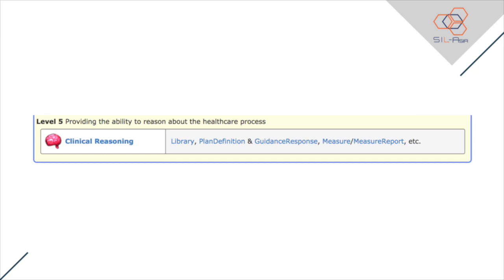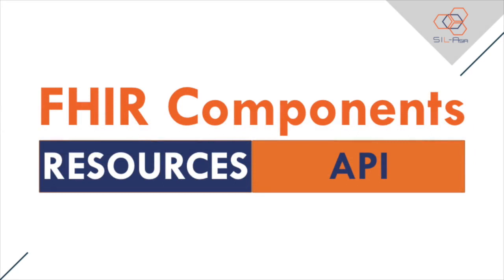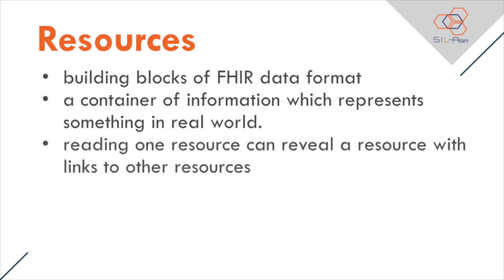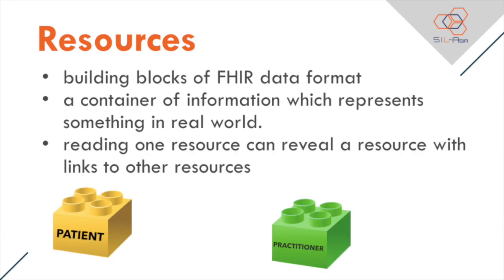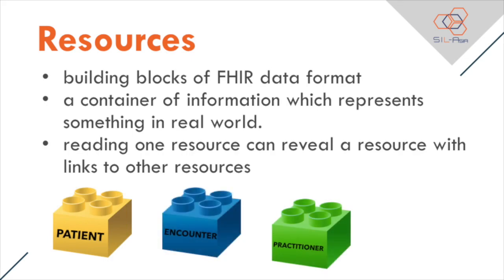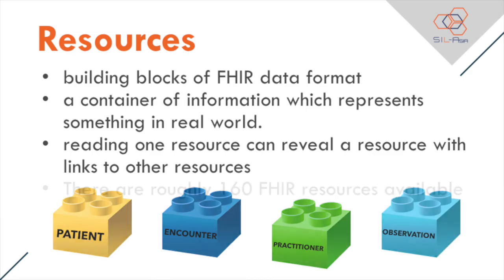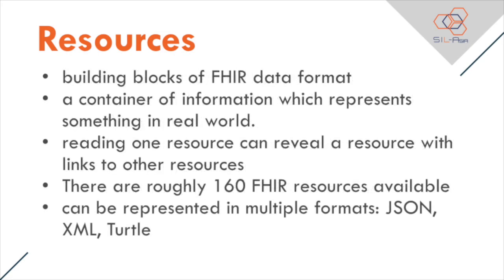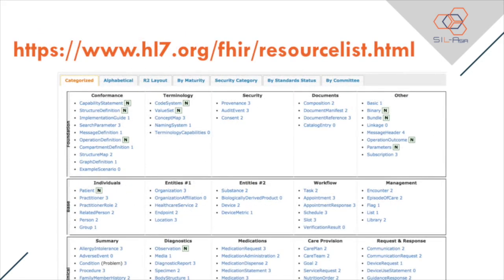At its core, FHIR contains two primary components: resources and API. FHIR Resources are the building blocks of FHIR. A resource is a container of information which represents something in the real world. Reading one resource can reveal links to other resources — like when a patient visits a practitioner, an encounter will exist, and upon examination, observations can be recorded for that encounter. There are roughly 165 resources available and can be checked in the resource list on their site. Resources can be found at www.hl7.org/fhir/resourcelist.html.